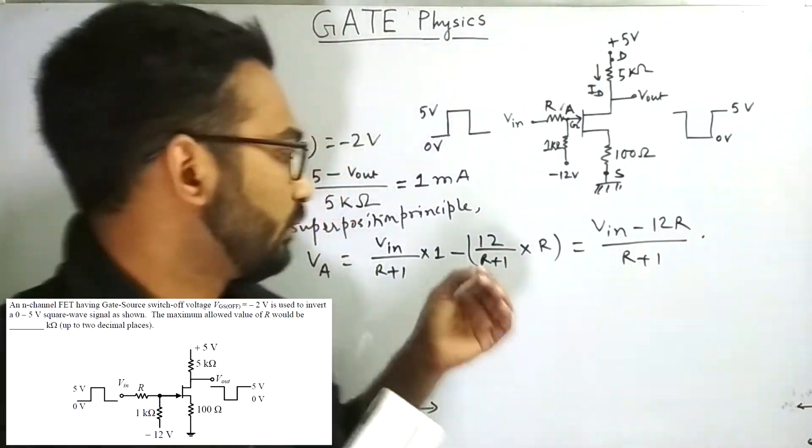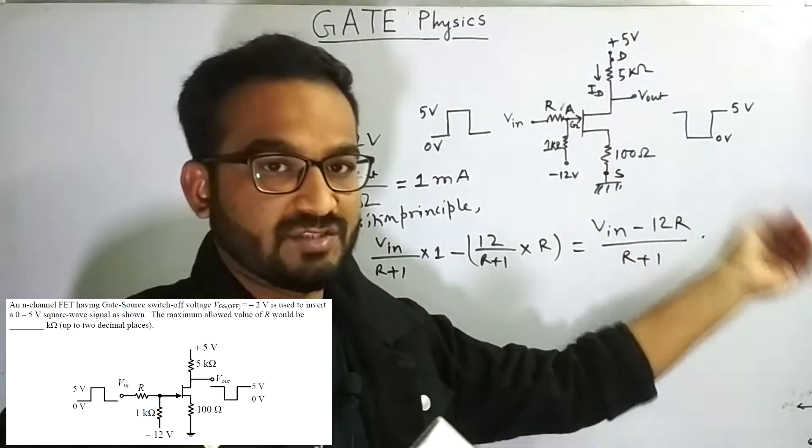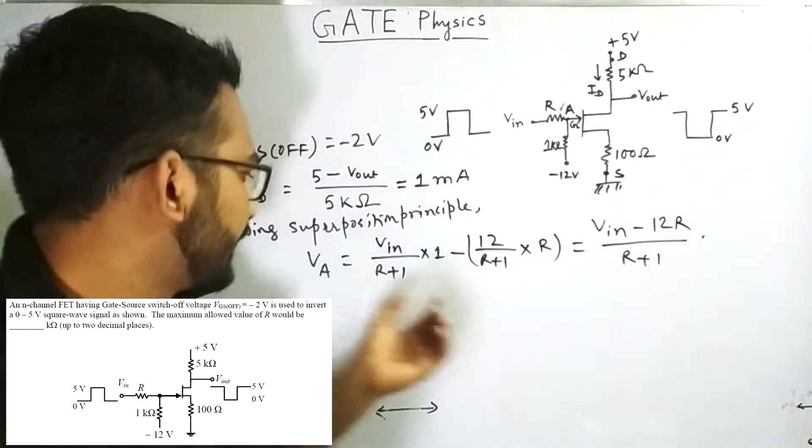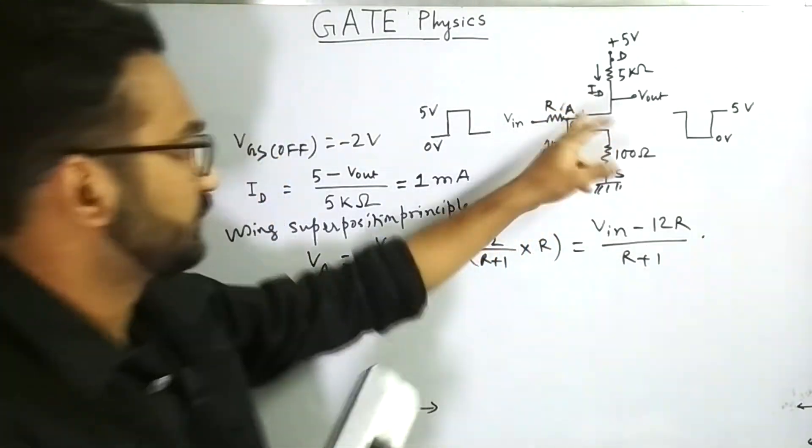Now, if somehow we get to know the value of VA, then we can easily say the maximum allowed value of R. Now, how can we get to know the value of VA? So to do that, we are using this thing.